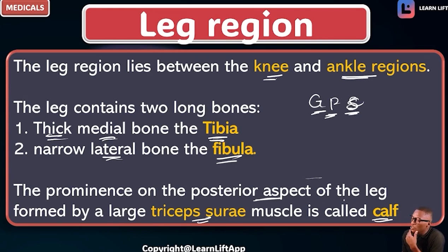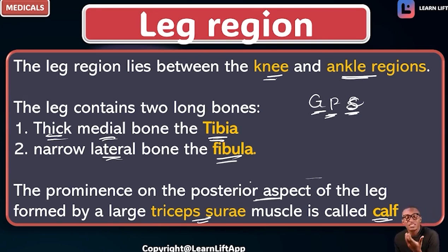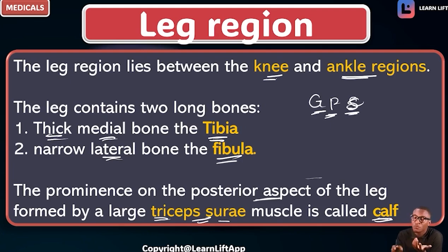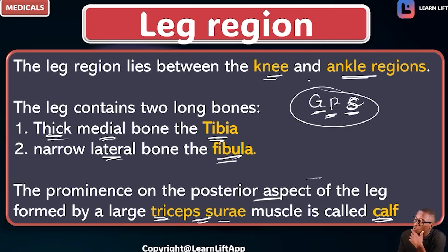The prominence at the posterior aspect of the leg — what is that prominence? It is formed by the triceps surae. Triceps means three. The triceps surae muscles are called the calf muscles. What are the calf muscles? I call them the GPS.